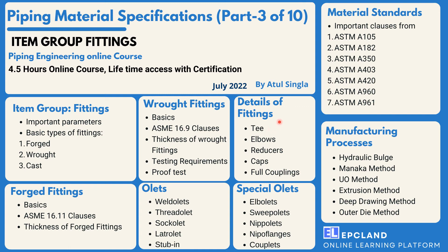We will look into the details of fittings — each section including tees, elbows, reducers, caps, and full couplings — covering what various clauses and things we need to understand when working on any PMS. Then we will look into outlets and special outlets, covering all sections: Weldolets, Threadolets, Sockolets, Elbowlets, Latrolets, Nipolets, and other special outlets — their applications, how they are represented in PMS, and their use in live projects.